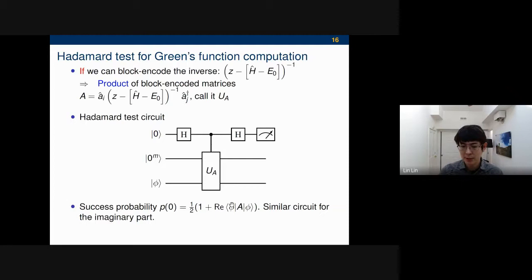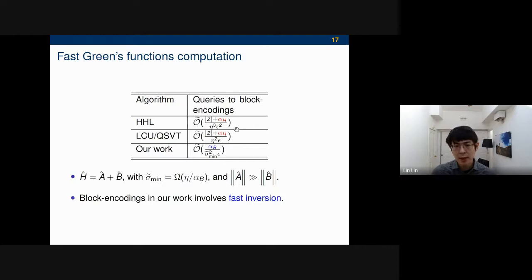If you run this version of the Hadamard test and you measure how frequently you obtain zero, then you just do a simple algebra, find that the success probability is one-half, one plus the real part of the thing you want, where this part is the ground state. Similar circuits, you just modify here a bit at the phase gate, you will get the imaginary part. This one circuit, per se, has a non-optimal dependence with respect to the precision, but you can improve it with the standard amplitude estimation technique. This one is slightly more formal in the sense that previously I was cheating a bit. The standard algorithm would depend on the block encoding factor of H, and our algorithm depends on the block encoding factor of B. The key idea here is you need something called the fast inversion.